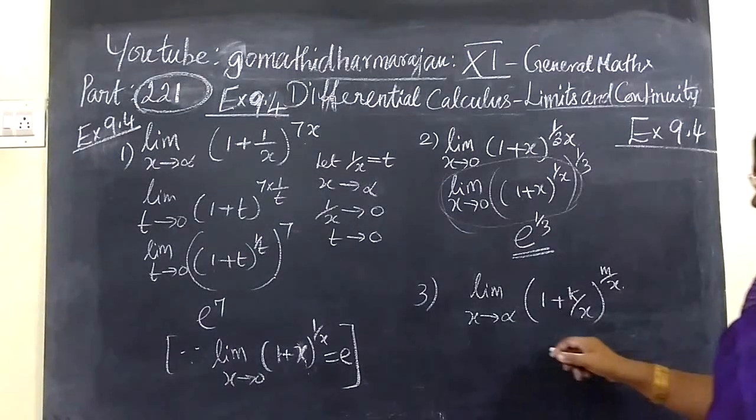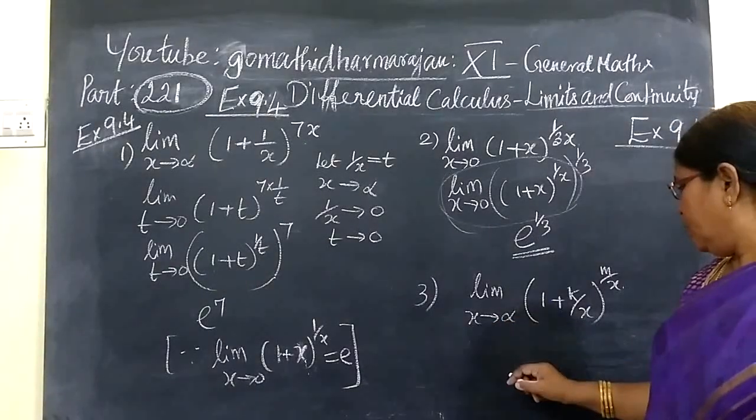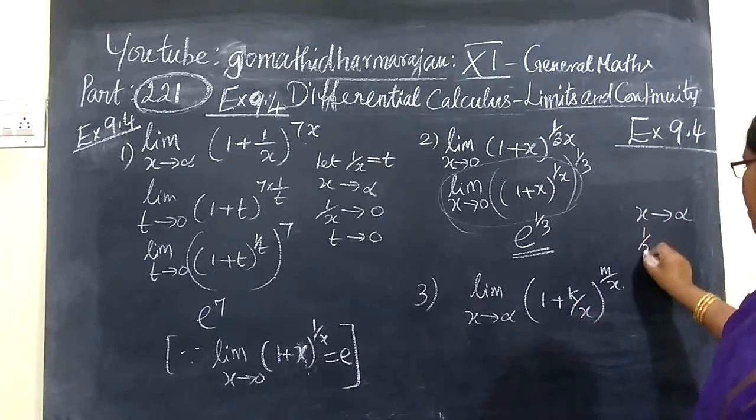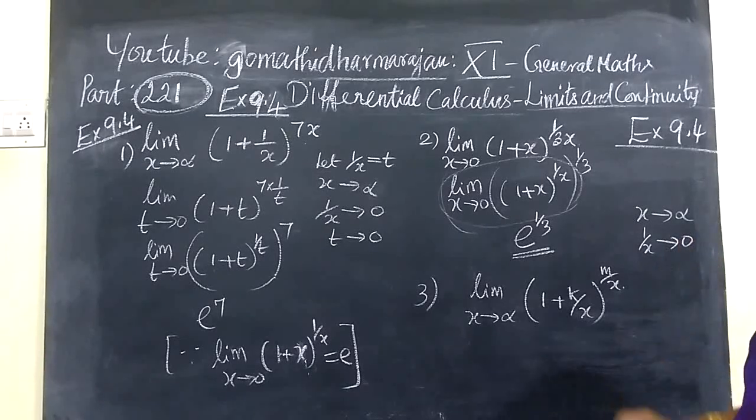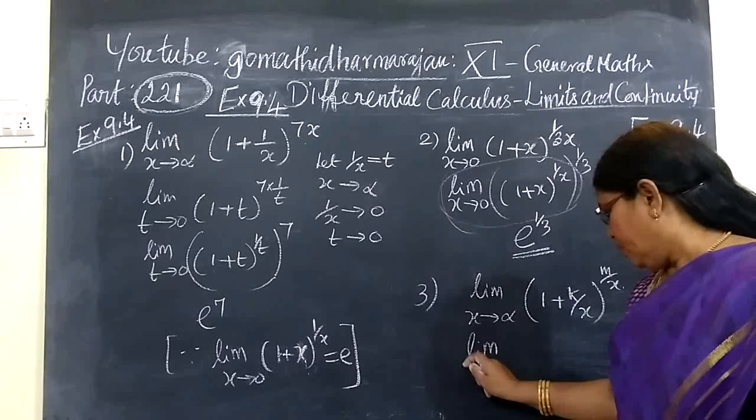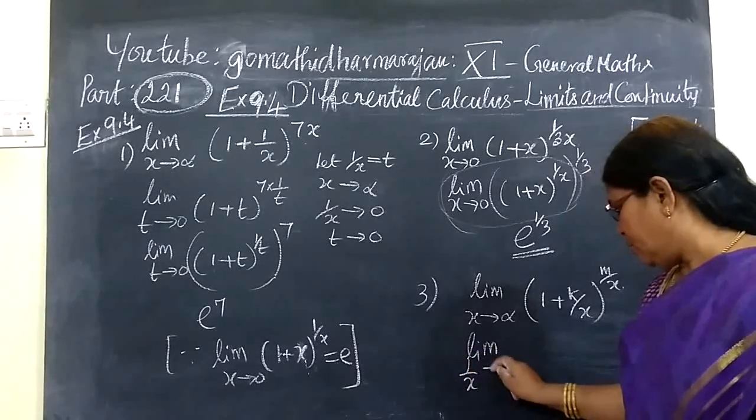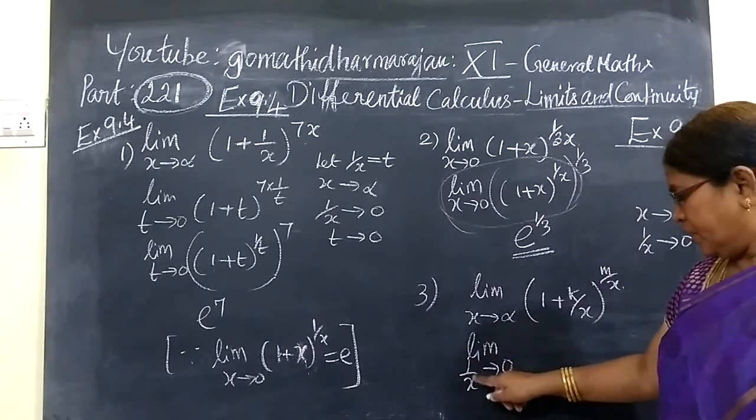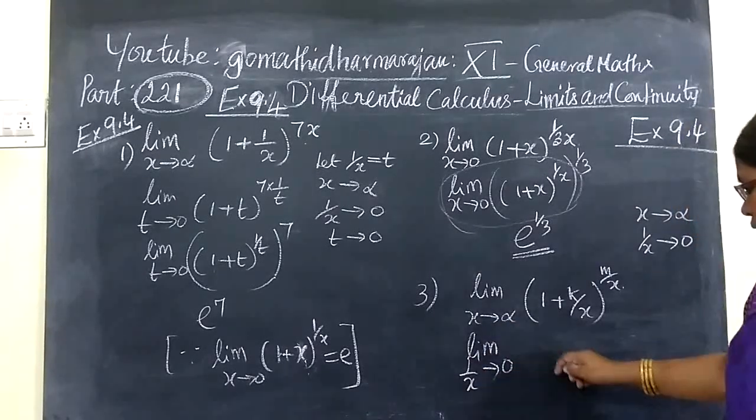Now comes to the third question. X tends to infinity implies 1 by x tends to 0. So we make this 1 by x tends to 0. X tends to infinity, we take it as 1 by x tends to 0.